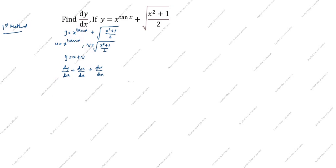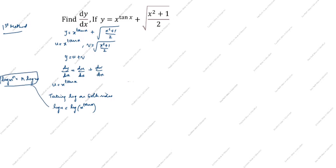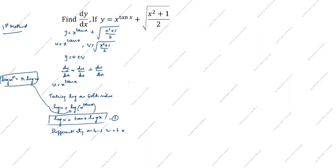What we need to find is dy/dx. Now, u is equal to x power tan x. Taking log on both sides: log u equals log of x power tan x. Using the formula log m power n equals n log m, we split this. So log u equals tan x times log x. This is the first equation. Now differentiating both sides with respect to x in equation 1.